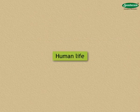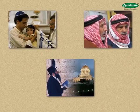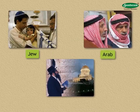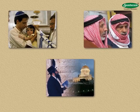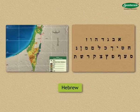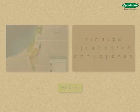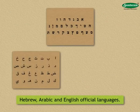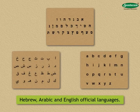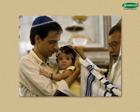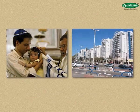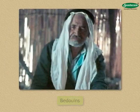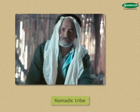People who live in this country are Jews, Arabs, Baha'i, and others. This is a land where many religions have emerged. Though the main language of the country is Hebrew, the government uses Hebrew, Arabic, and English as official languages. Most of the Jews have settled in cities, while Bedouin people from a nomadic tribe are seen in rural areas.